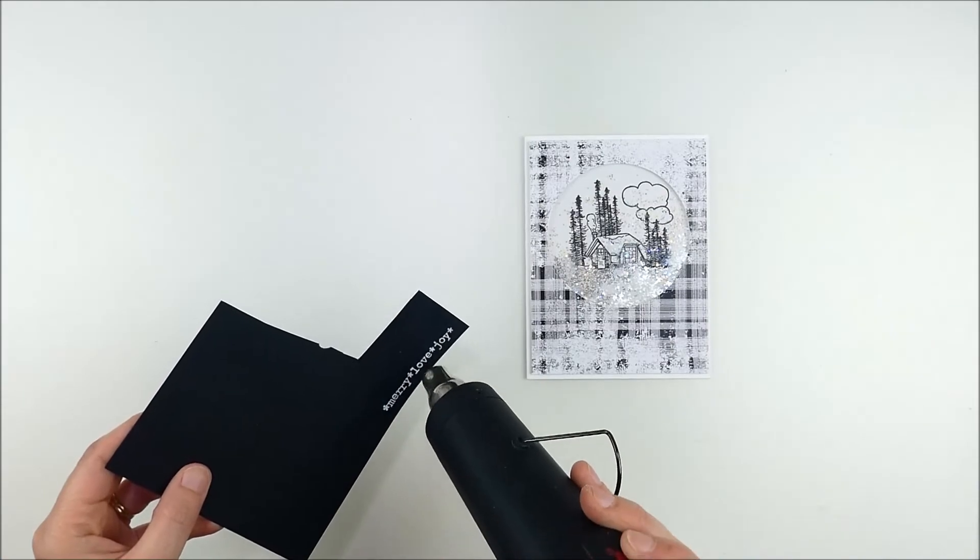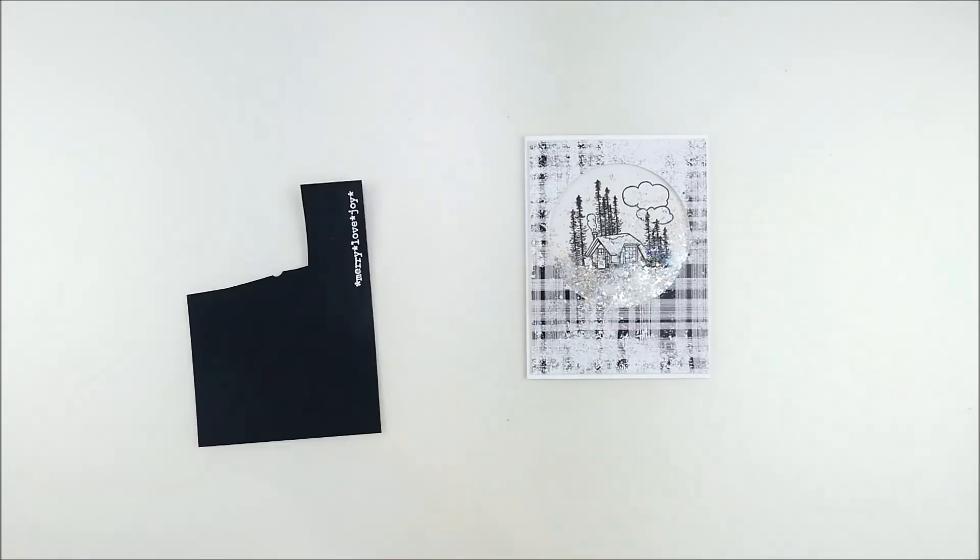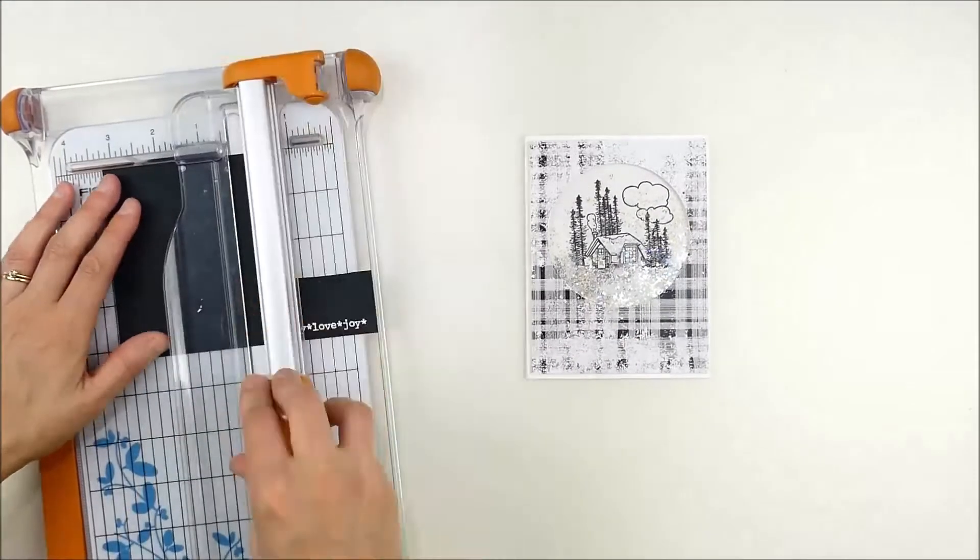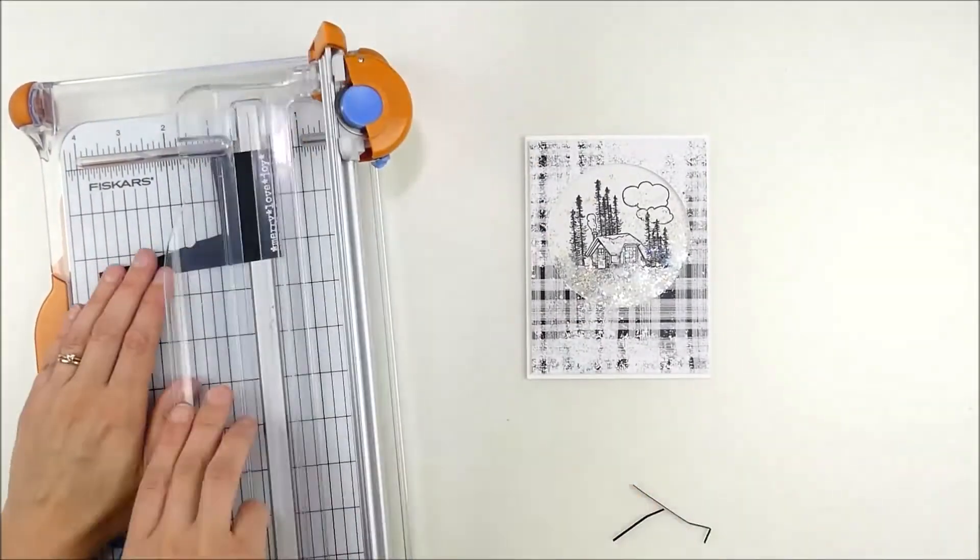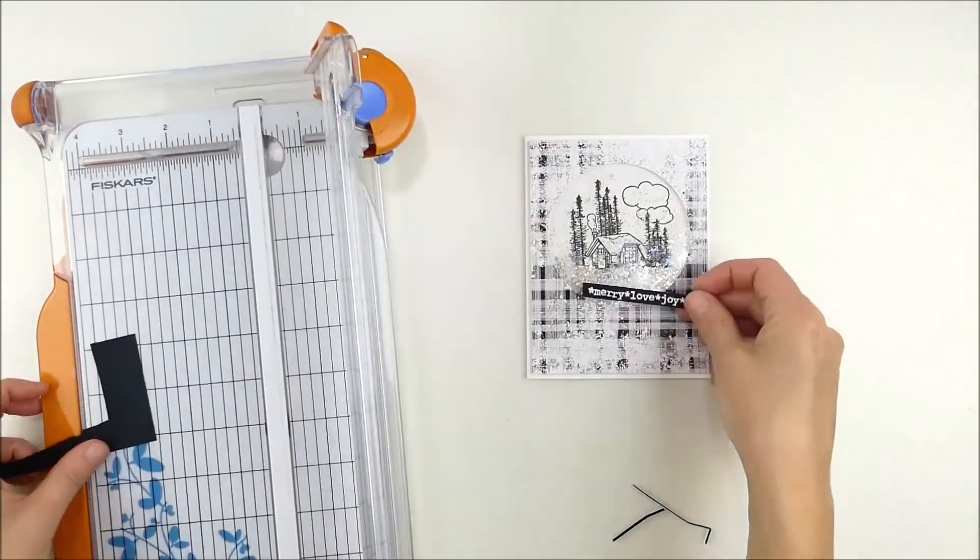that pattern paper being black and white and the image black and white. This is a great monochromatic design and so adding that sentiment in black and white just kind of helps it pop and really pulls that color scheme together.